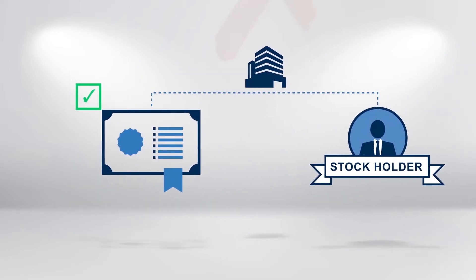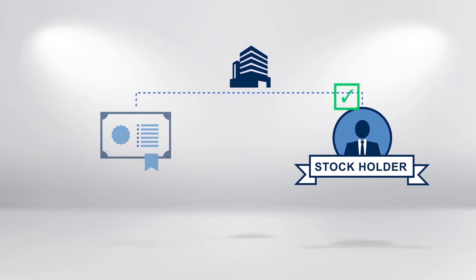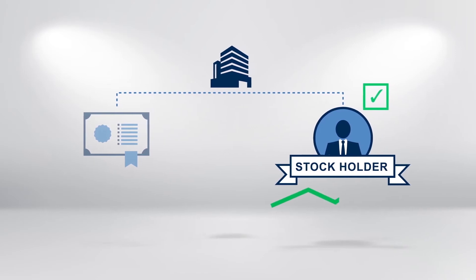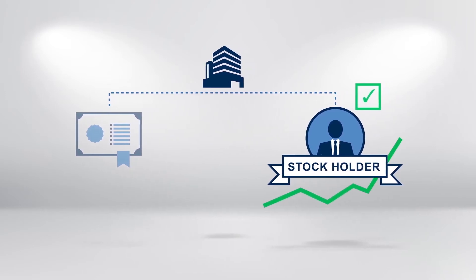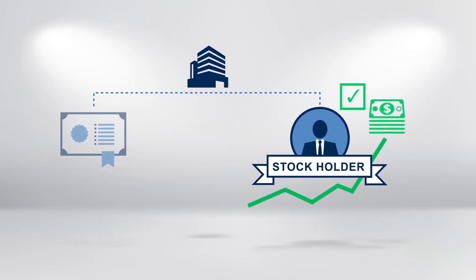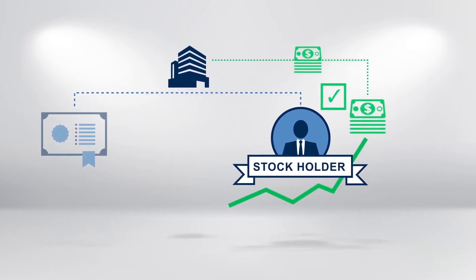Bondholders are in a better position than the stockholders in case of bankruptcy, but they don't have the upside potential that stockholders have in the event that the issuer performs better than expected by the market. These include being able to sell the stock at a higher price than it was bought for and being able to receive dividends from the issuer.